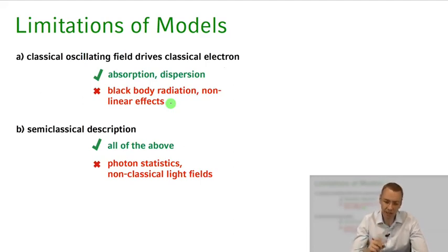When we turn to the semi-classical description, actually we can describe all of the above phenomena. But we still can't describe phenomena like photon statistics or non-classical light fields that go beyond this description. So this is really where we need the full power of the full quantum mechanical description of the light field being quantum mechanical and the atom being quantum mechanical.